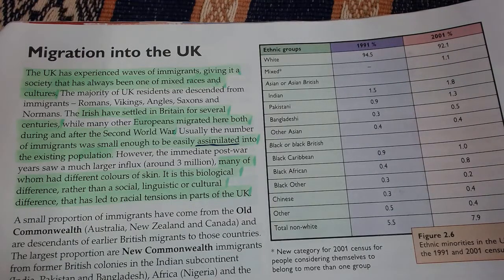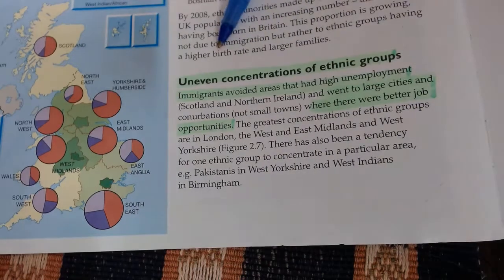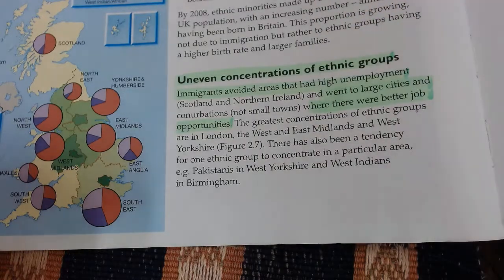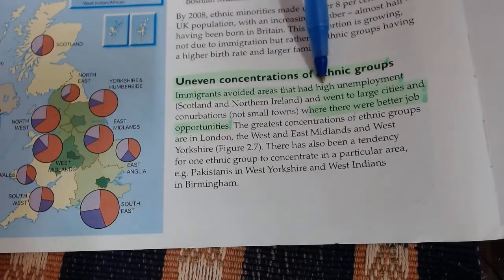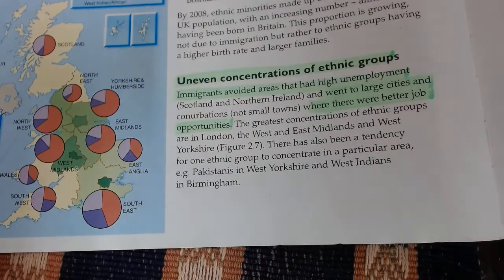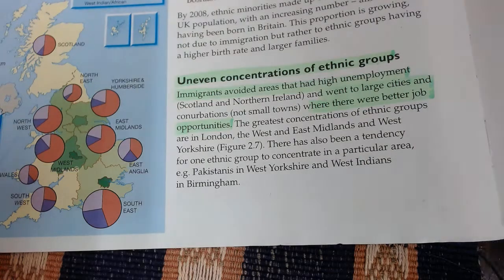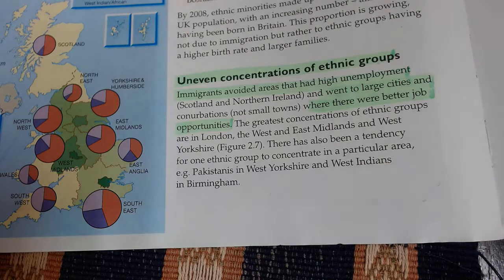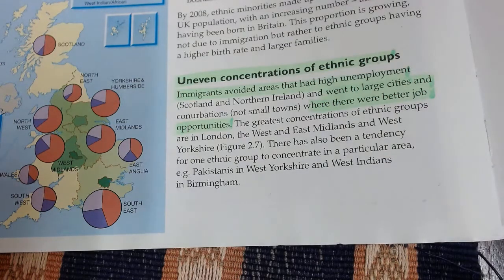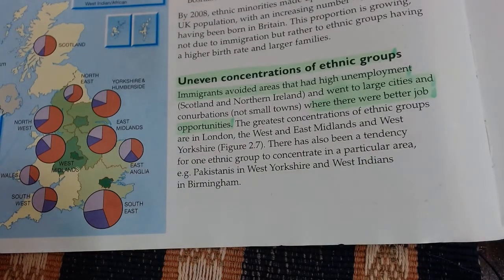There's also an uneven concentration of ethnic groups. Ethnicity is your background, colour, or race. Immigrants avoided areas with high unemployment, moving straight into cities where there are better job opportunities. So you get an unrepresentative concentration of immigrants in cities — that's where they all want to move to get the best jobs. Cities tend to have the most diverse populations, and this is also where people start to feel overwhelmed by mass immigration. In the next video, we're going to move on to page 26.